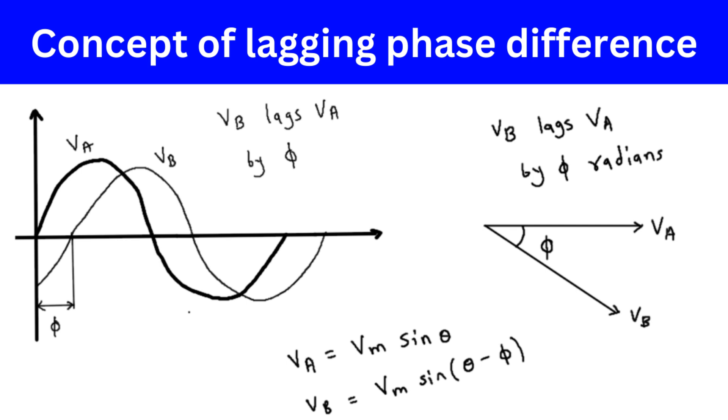If Vb has a higher amplitude than Va, then its phasor vector will be longer than the phasor vector for Va.